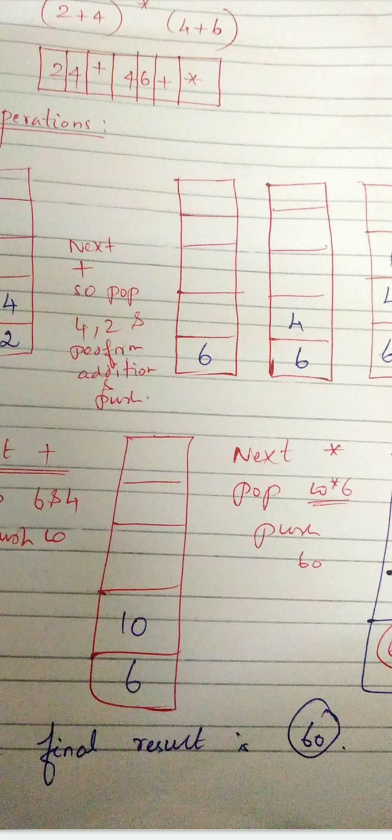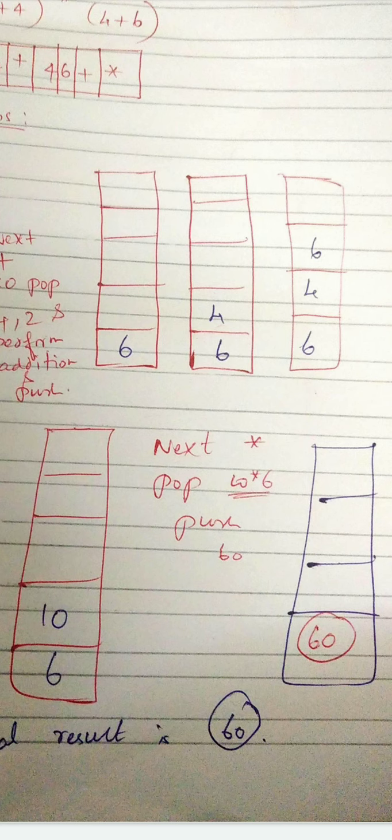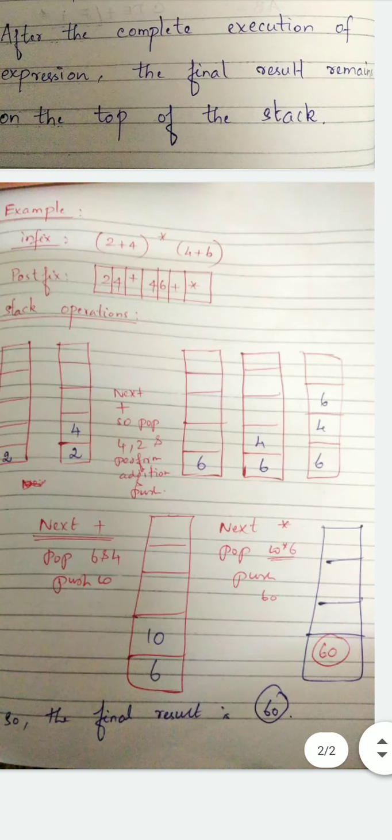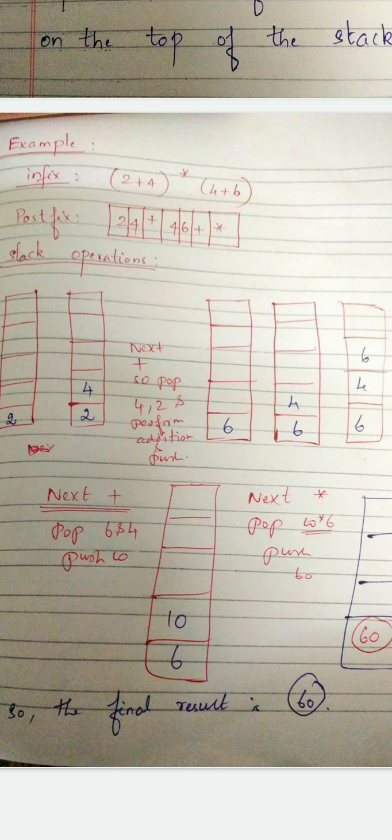It is 10. And next again star. So pop out 10 and 6 and perform multiplication. Now the result is 60. So thus in this way you have to evaluate the expression using stack. So hope you now understand how the expressions were evaluated using stack concept. Thank you.